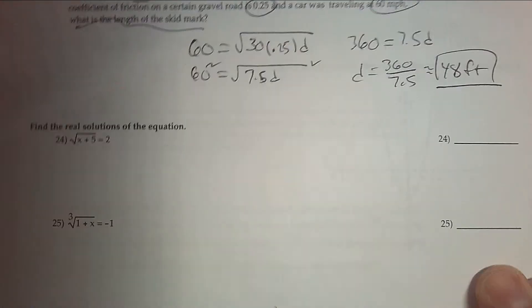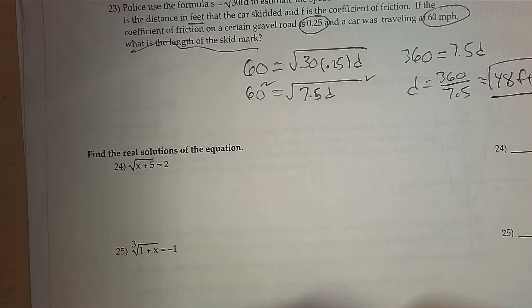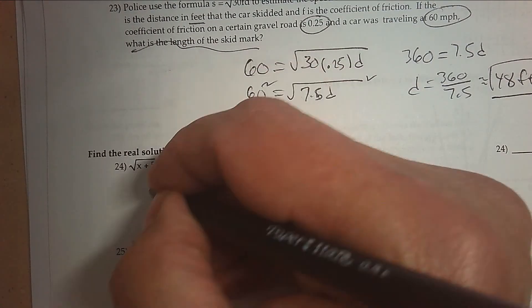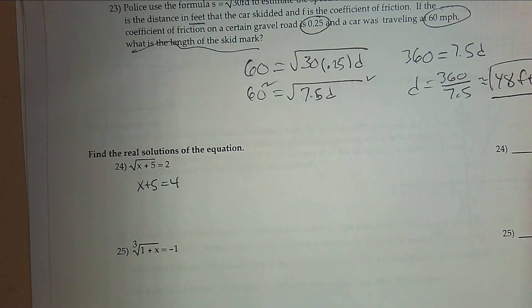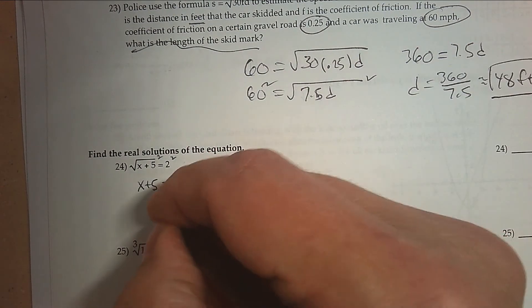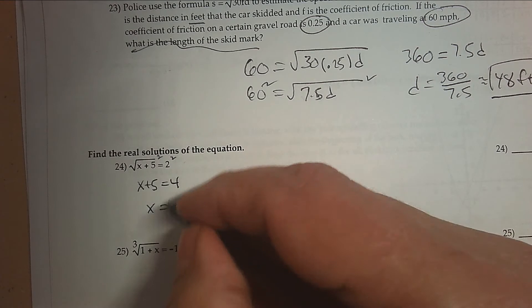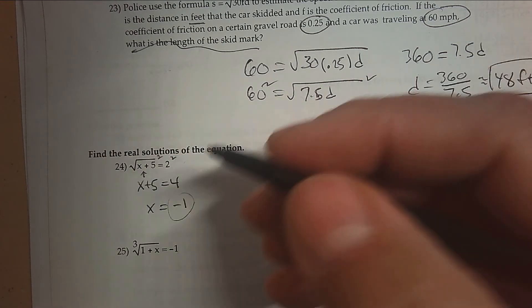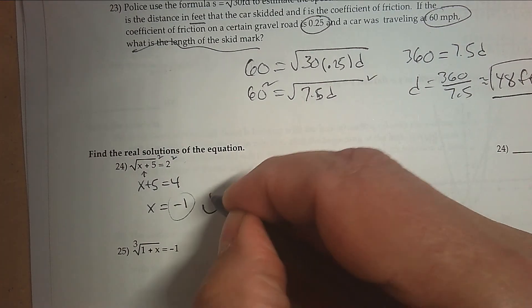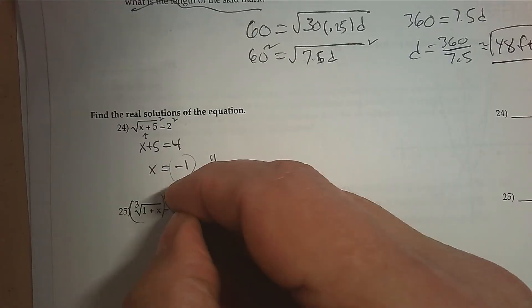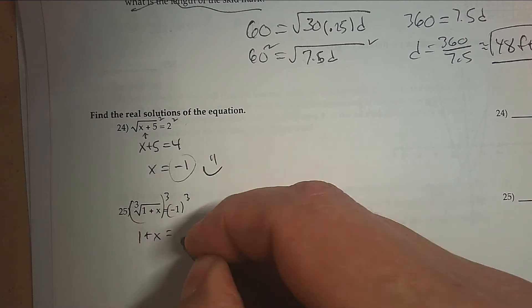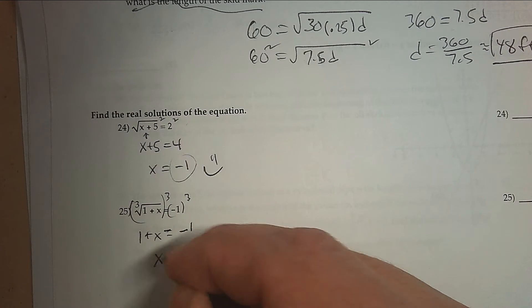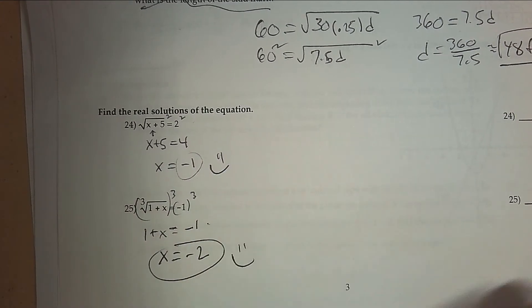Can you solve these equations? Be careful of the extraneous — the answer at the end can't be negative underneath. Step one is to square both sides: 2 squared is 4. Step two, subtract, and you get −1. But when I take −1 and plug it in, it's fine — it's a positive number under the square root sign. For the cube root, I'm going to cube both sides to undo it. So I have 1 + x = (−1)³ = −1. Subtract 1, you get −2. The domain for a cube root is all real numbers, so the answer is perfect.